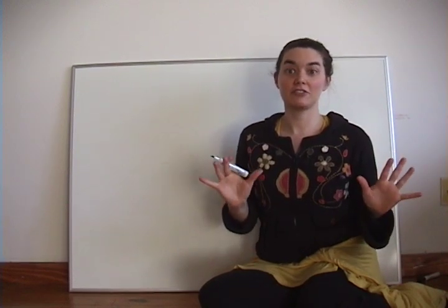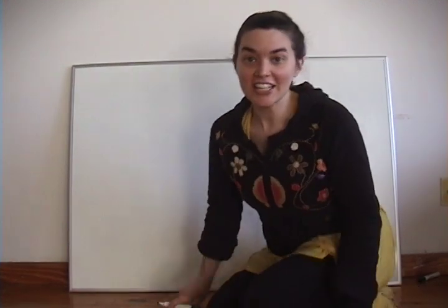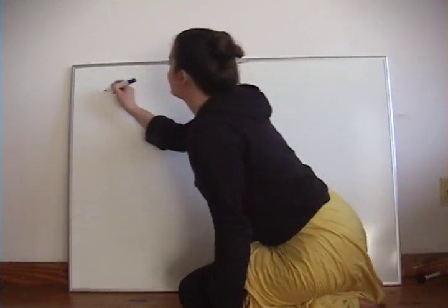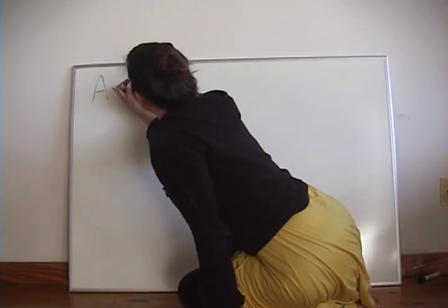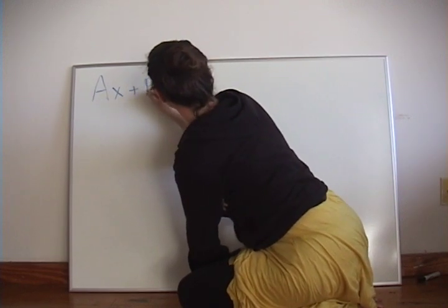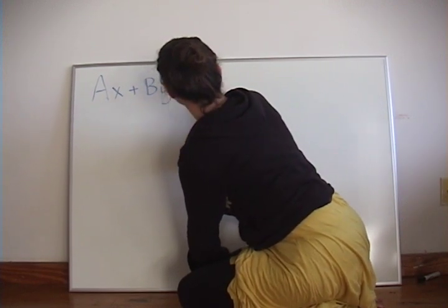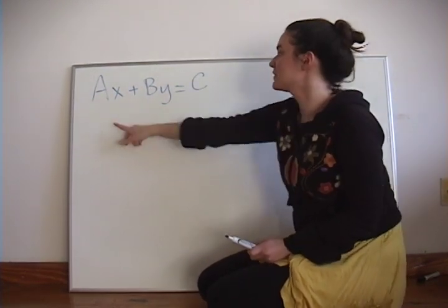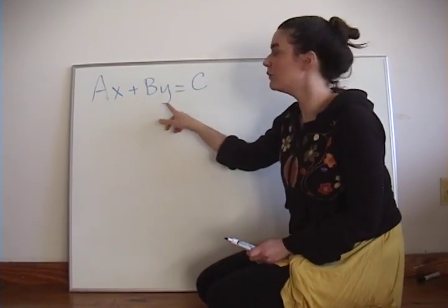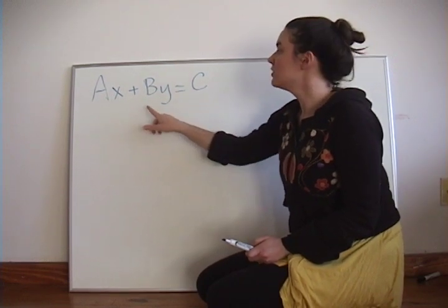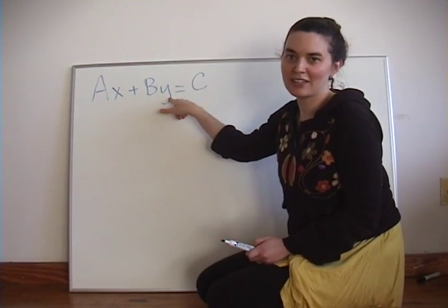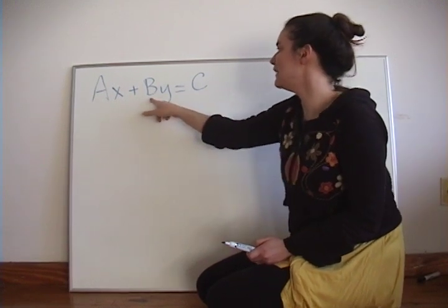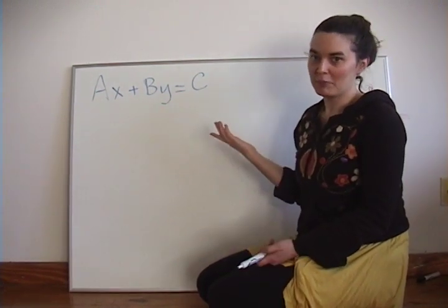So let's just start off by talking about what standard form and slope-intercept form look like. So here is standard form. When you're dealing with a problem that's in standard form, it's going to look like Ax + By = C. So X and Y will just be X and Y, the variables, and then A, B, and C will be numbers.